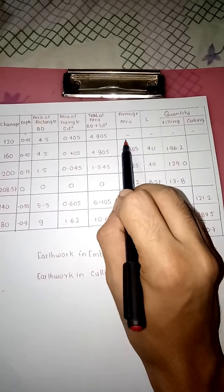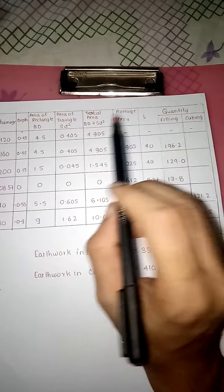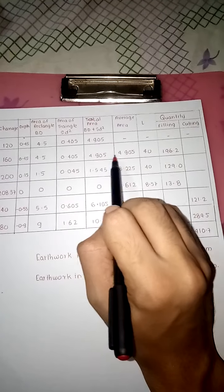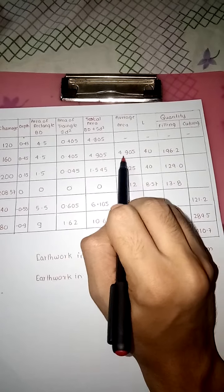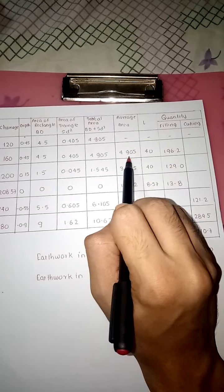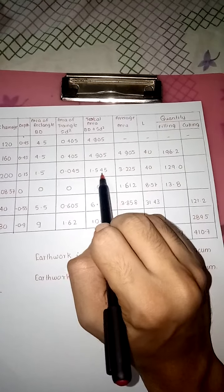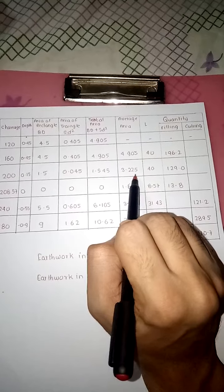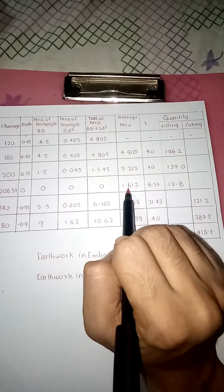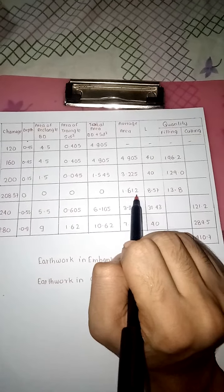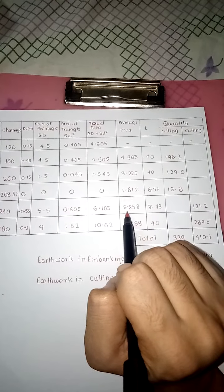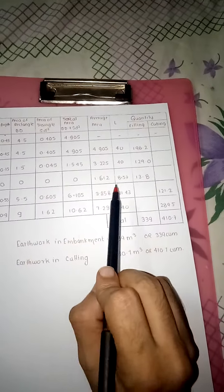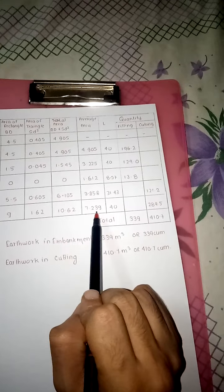Average area: take average of these two areas. 4.905 + 4.905 divided by 2, answer 4.905. 4.905 + 1.545 divided by 2 = 3.225. 3.225 + 0 divided by 2 = 1.612. 1.612 + 6.105 divided by 2 = 3.858. 3.858 + 10.62 divided by 2 = 7.239.